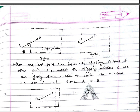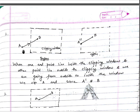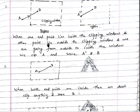Rule two: consider edge AB where point A is lying outside the clipping window and point B is lying inside. When one endpoint lies inside and the other lies outside, and the edge is going from outside to inside the clipping window, we clip point A and the portion up to the clipping window boundary, marking a new point called A dash. What we save is A dash and then B.